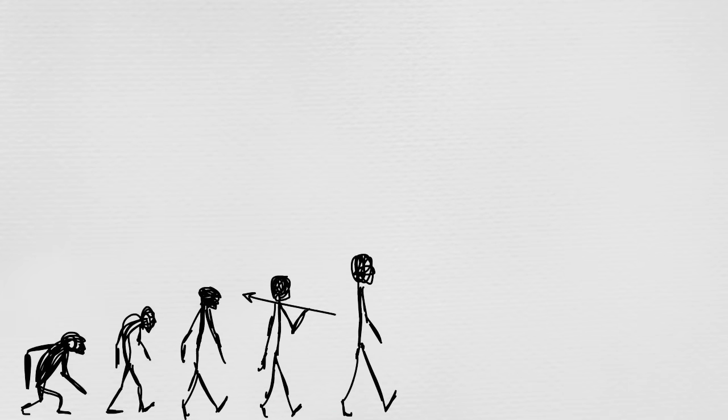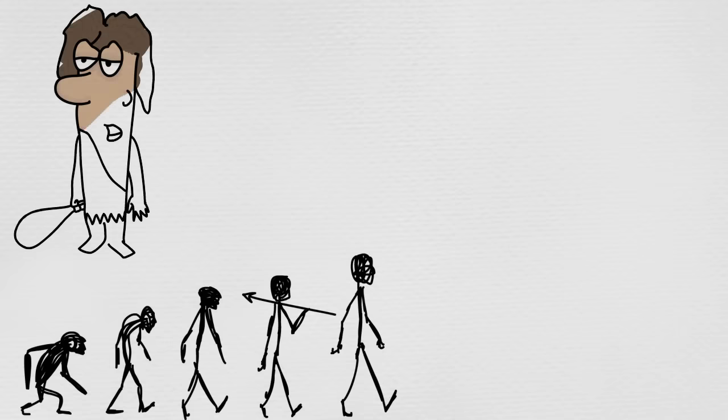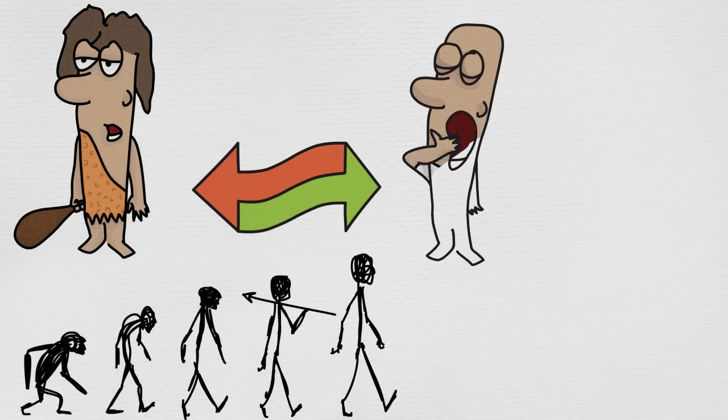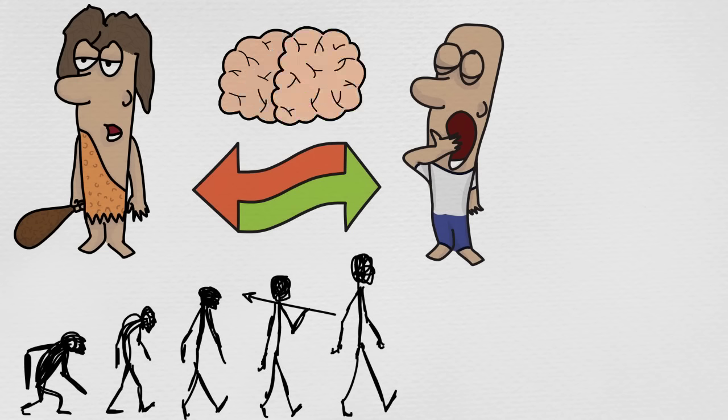Physical activity primes the brain for learning, and if we look at it from an evolutionary standpoint, it makes perfect sense why. Often we forget that humans evolved as hunter-gatherers. It's only in the last few centuries that our lives have become more sedentary. However, evolution doesn't work that fast, and today we still have the same brains as our ancestors.